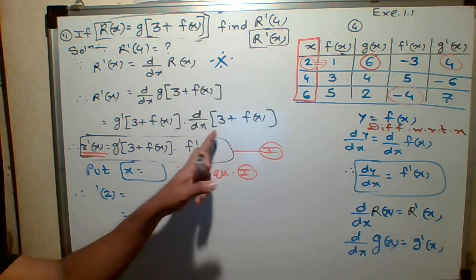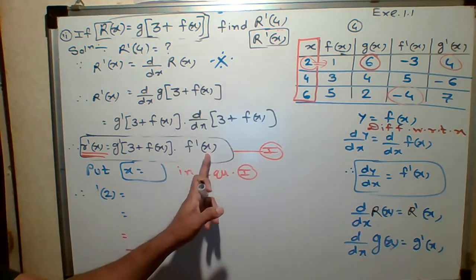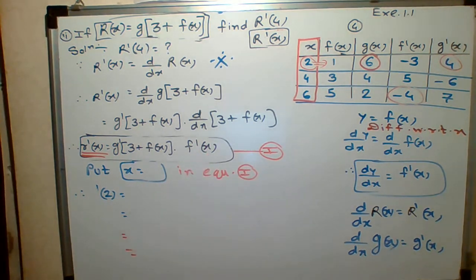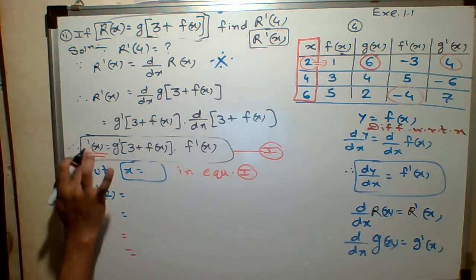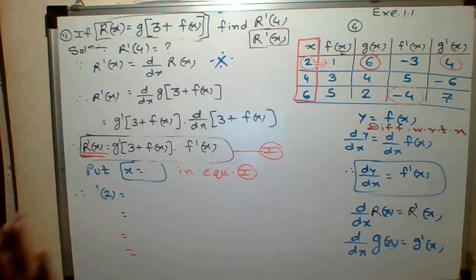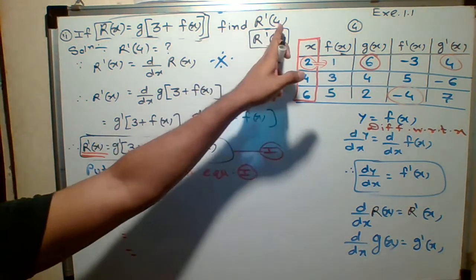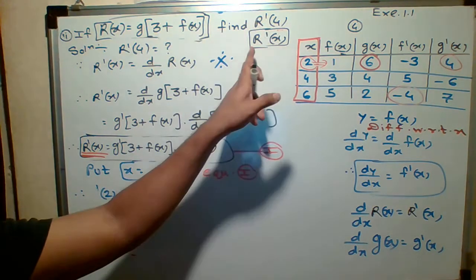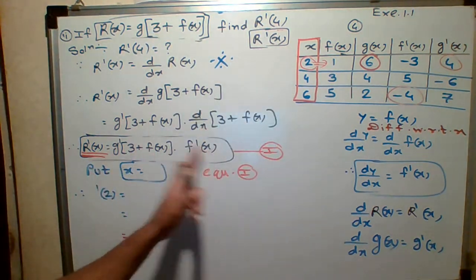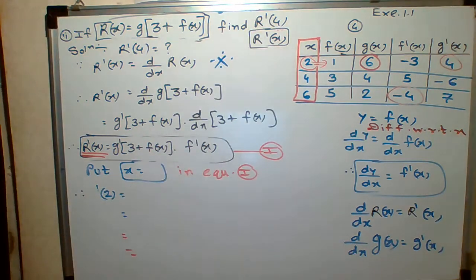Hope so you understood this particular step. Let's see. Derivative of 3 is 0. Derivative of F of X is what? F dash of X. Now what do I need? This is what your capital R dash of X got. That means I need R dash of 4. But before I found R dash of X, so I got this expression.